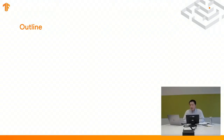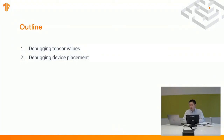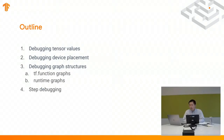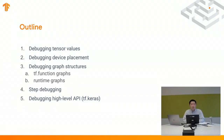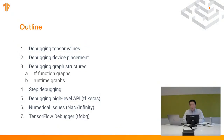Here's a brief outline of this presentation. We're going to talk about how to debug tensor values, how to look at the placement of ops on different devices like CPUs and GPUs, and how to debug the structures of graphs in TensorFlow 2, including graphs from tf.functions and graphs optimized for the runtime. In section 4, we'll cover step debugging using an IDE to step over code line by line. Section 5 moves to high-level API — specifically tf.keras. Section 6 covers debugging numerical issues like NANs and Inf. Finally, I'll present the TensorFlow Debugger tool, including existing v1 features and the v2 features currently in development.